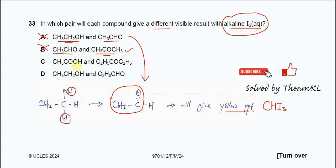For the third pair: this one is ethanoic acid. Even though ethanoic acid looks somewhat like a methyl ketone group, it will not form a yellow precipitate because it is a carboxylic acid. And ethanal in this pair will also not form a yellow precipitate here. So this pair is not the answer either, as neither compound gives a yellow precipitate — they give the same result.